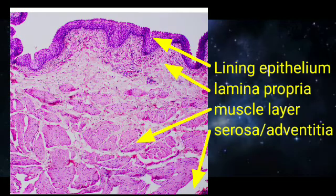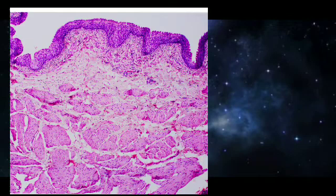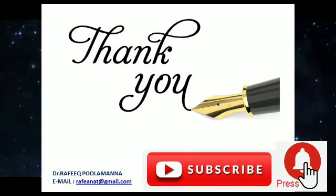To identify the histological slide of the urinary bladder with H&E stain, we need to identify the lining transitional epithelium with underlying lamina propria, randomly arranged muscle layer, and the serosa or adventicia. Thank you for watching this short video on the histology of the urinary bladder.